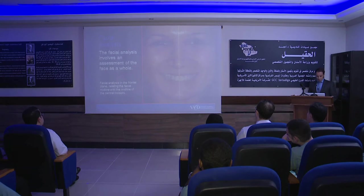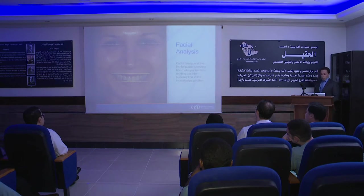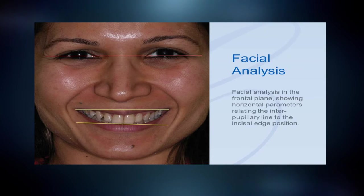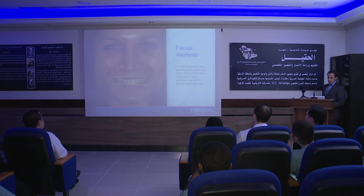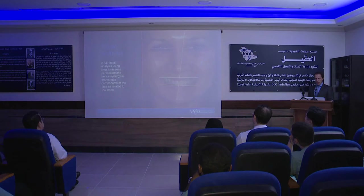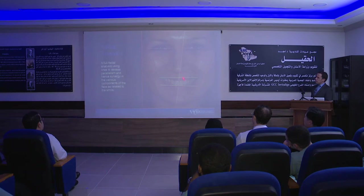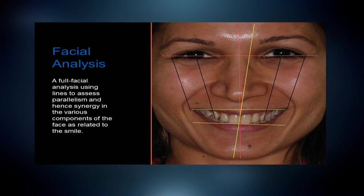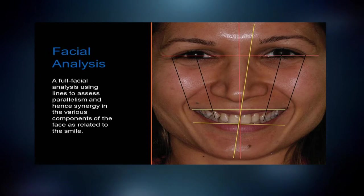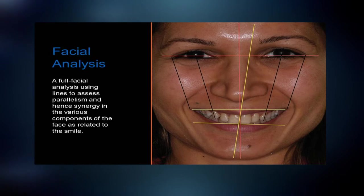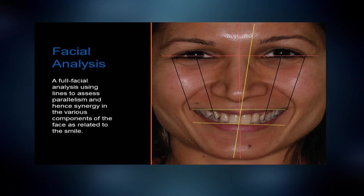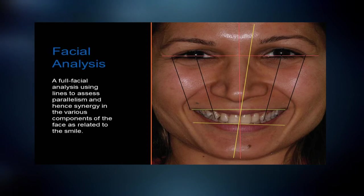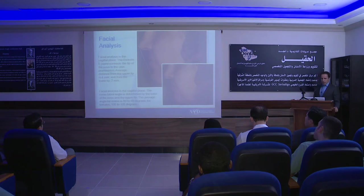Everything in the frontal plane — we have the incisal edge position which should be parallel to the interpupillary line, and the midline between the two centers should be exactly in the middle of the face. When the patient smiles, the line from the center of the eye to the cusp of the canine should be parallel to the line from the distal angle of the eye to the corner of the mouth.